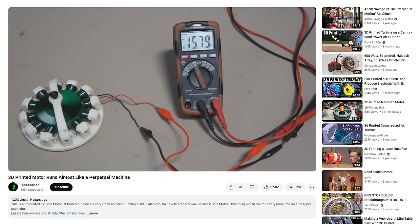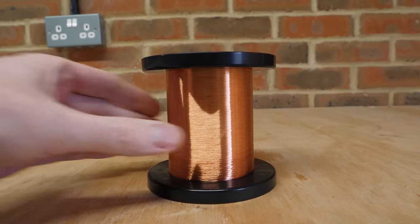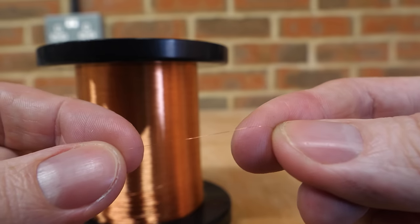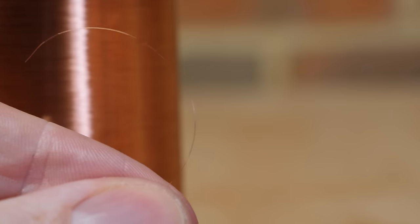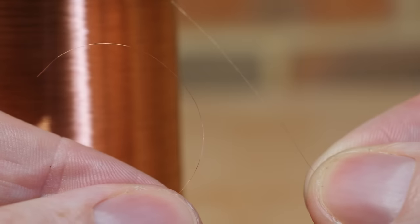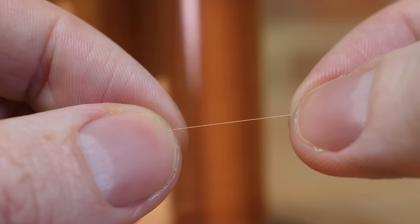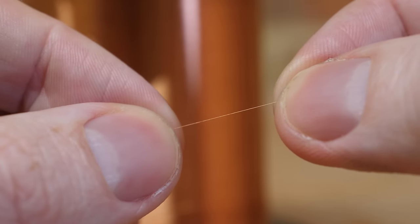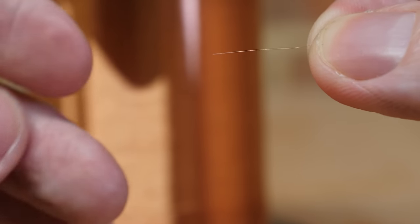In Laser Saber's motor, he used 42 gauge copper wire, which is incredibly thin, at roughly the same diameter of a human hair, and almost the same colour as mine. But this copper wire is far weaker than human hair as I'm able to snap it with very little force. So that's going to be fun to solder.